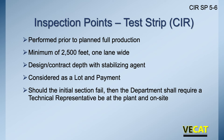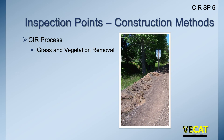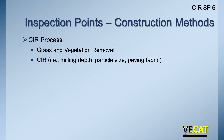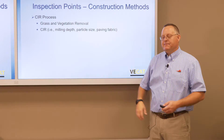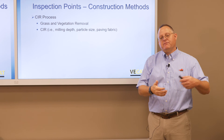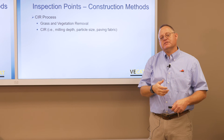Looking at specific inspection points for the cold in place process per the special provision: make sure no grass or vegetation is being pulled in from the shoulder. Check the milling depth — whether it's 3, 4, or 5 inches as specified in the contract. Check particle size by dry sieving to confirm nothing is greater than one and a half inches. If paving fabric is encountered, it must be removed — ideally identified before the project begins.